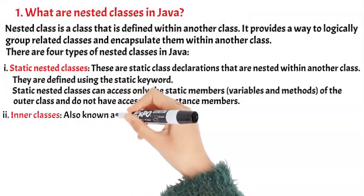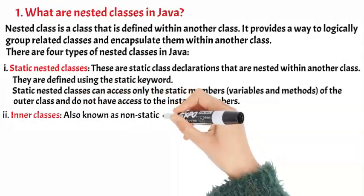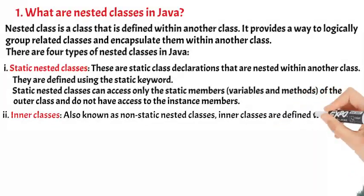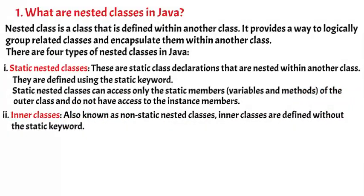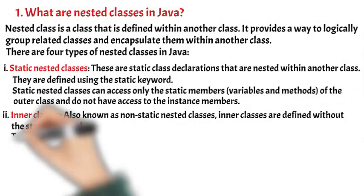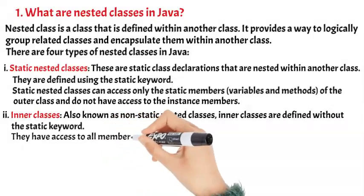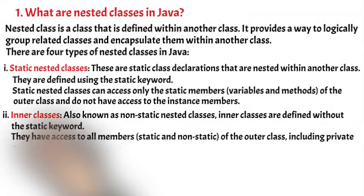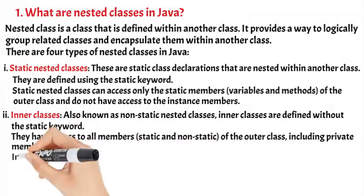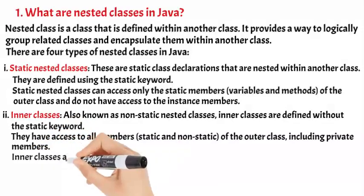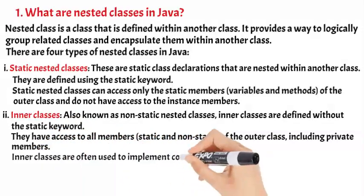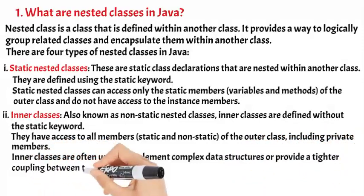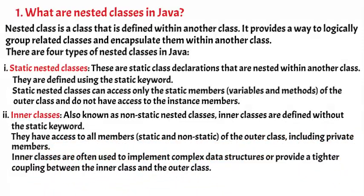2. Inner Classes: Also known as non-static nested classes, inner classes are defined without the static keyword. They have access to all members — static and non-static — of the outer class, including private members. Inner Classes are often used to implement complex data structures or provide a tighter coupling between the inner class and the outer class.